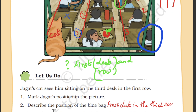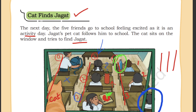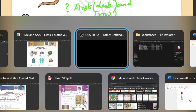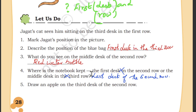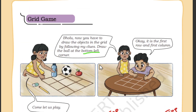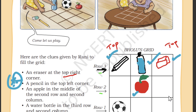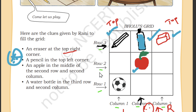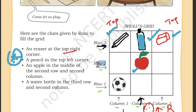Another question asked what you can see on the middle desk of the second row — the answer is a red water bottle. Similarly, in the worksheet I have framed many questions like a grid game, where you find the position of objects. For example, what is in column 2 and row 2? The answer is an apple. An eraser is at the top right corner.